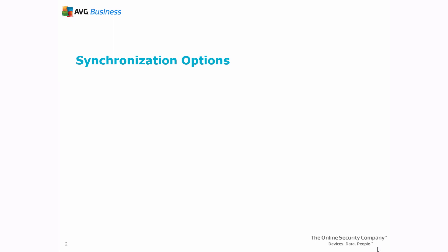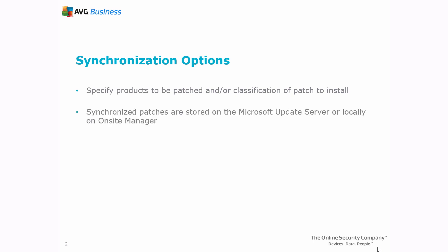We'll begin with synchronization options. These determine where to store patches and what products to patch. When patches are synchronized, they are stored on the Microsoft Update server and installed as needed. Or you can choose to store patches locally on Onsite Manager. Note that if you choose to store locally, you must have a minimum of 40 GB of disk space available.